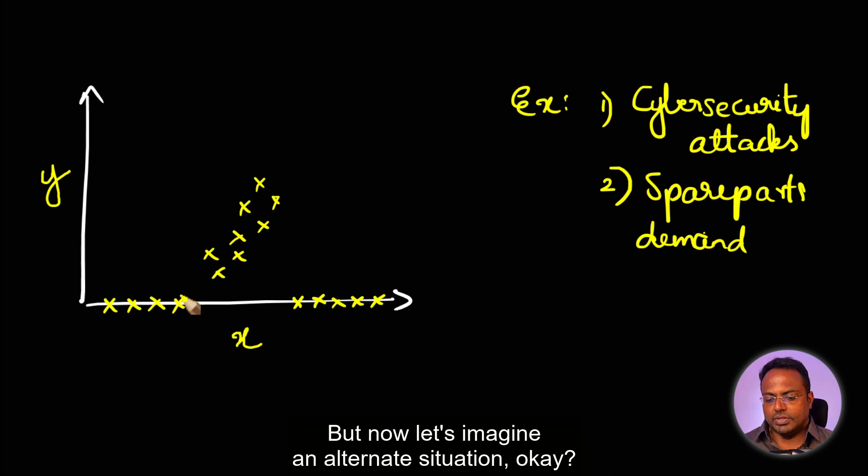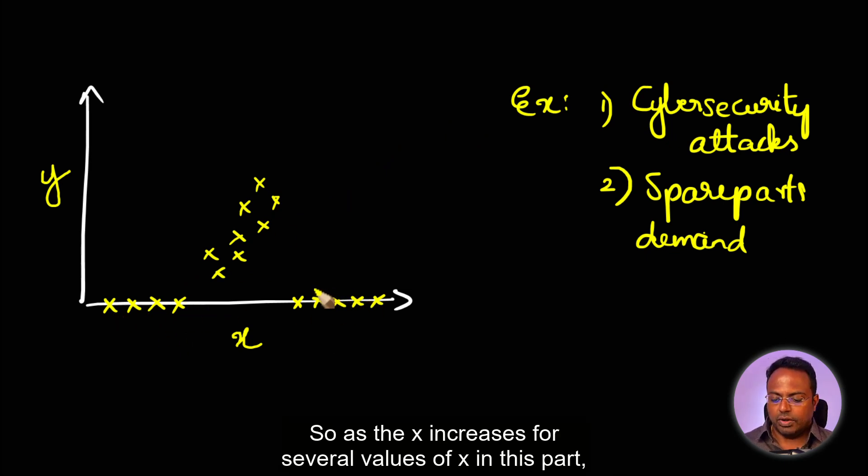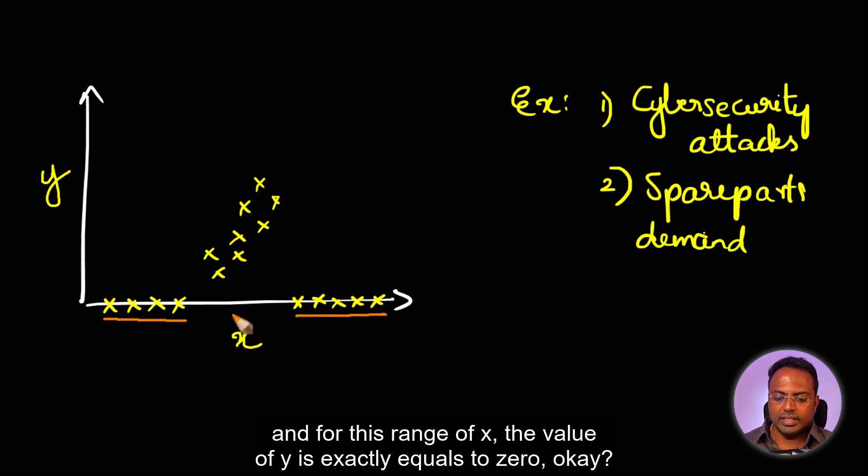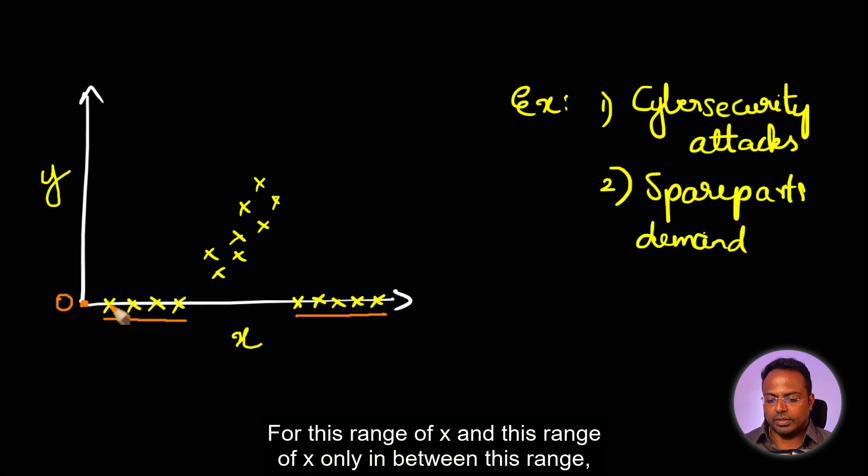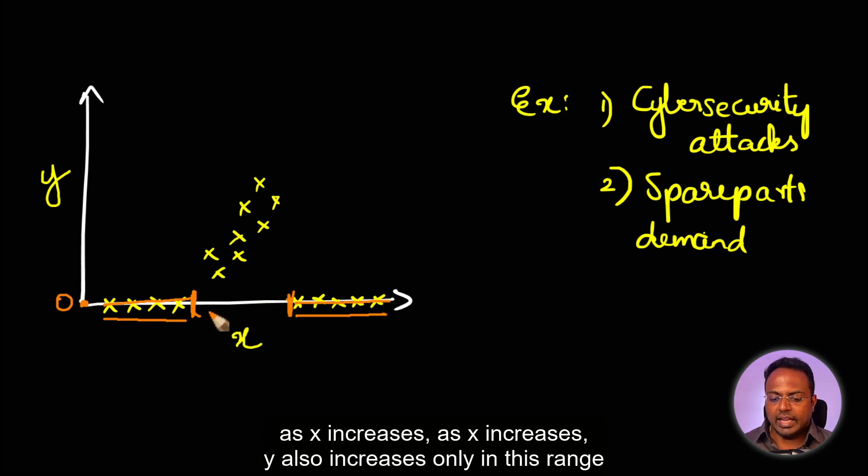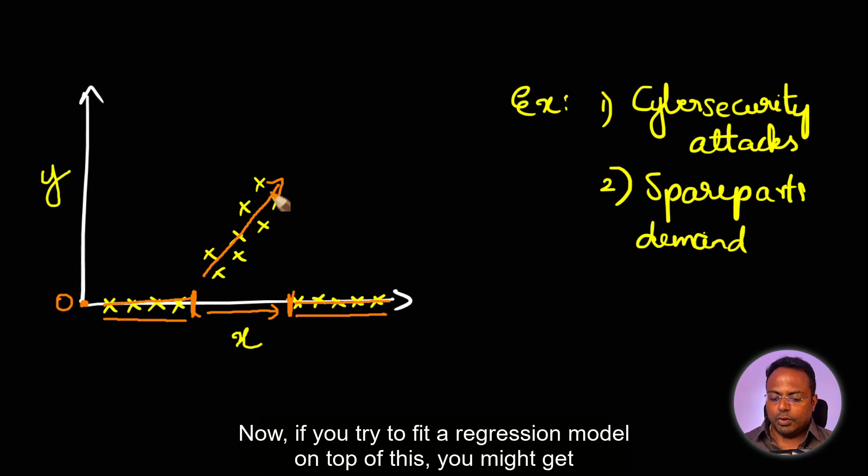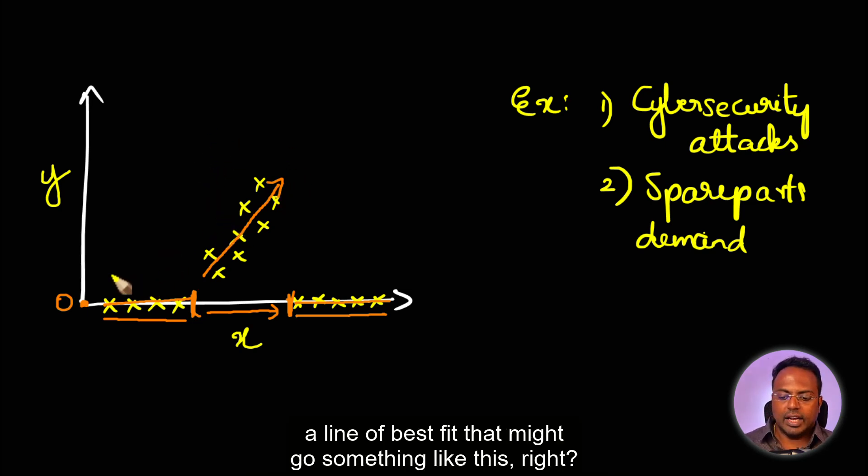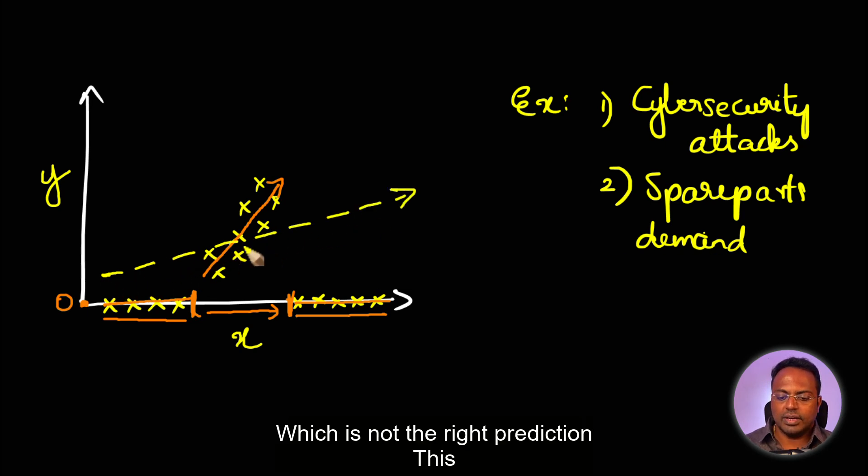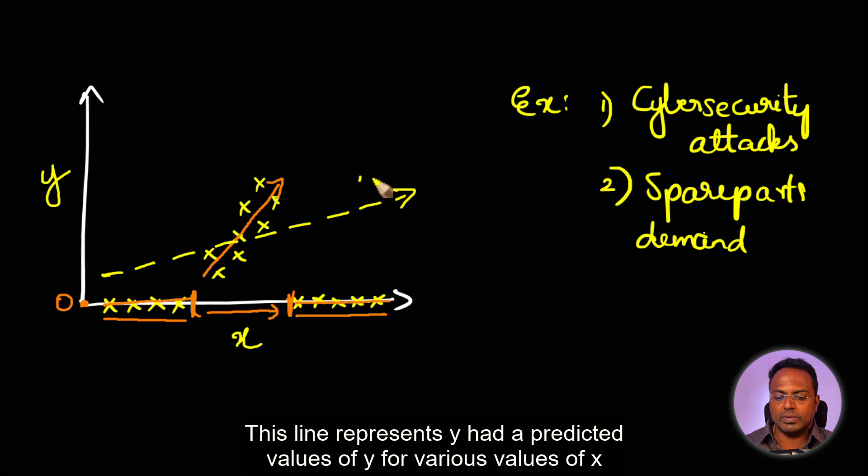But now, let's imagine an alternate situation. As X increases, for several values of X in this part and for this range of X, the value of Y is exactly equal to zero. For this range of X and this range of X, only in between this range, as X increases, Y also increases. Now, if you try to fit a regression model on top of this, you might get a line of best fit that might go something like this, which is not the right prediction.